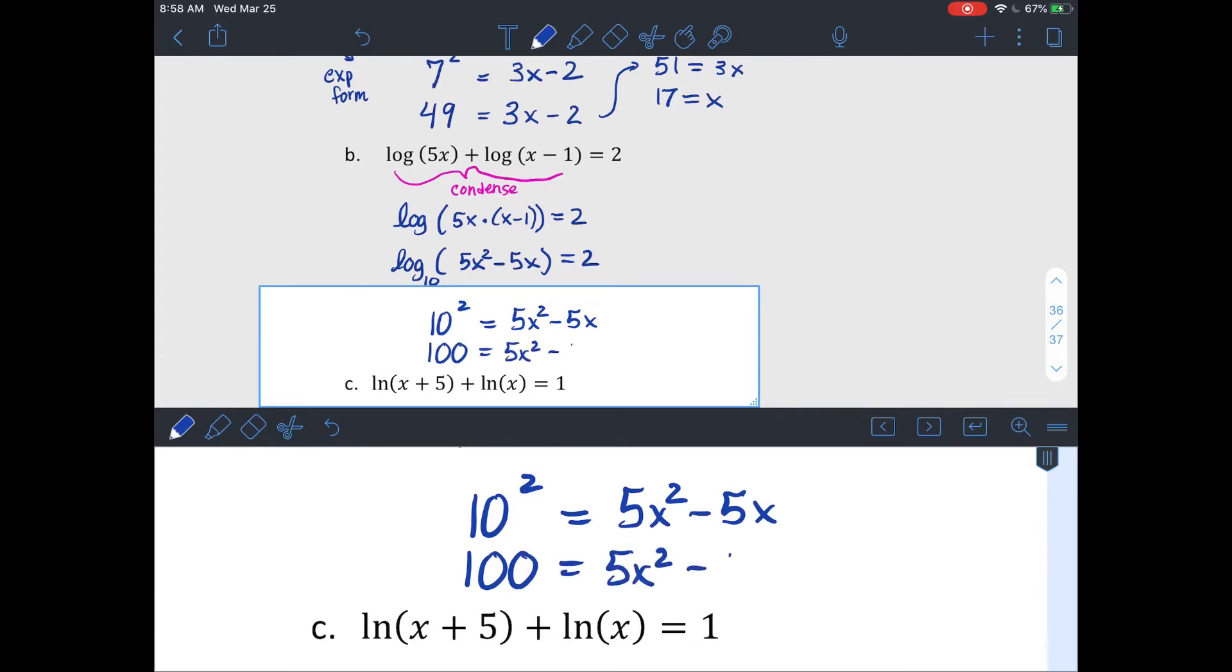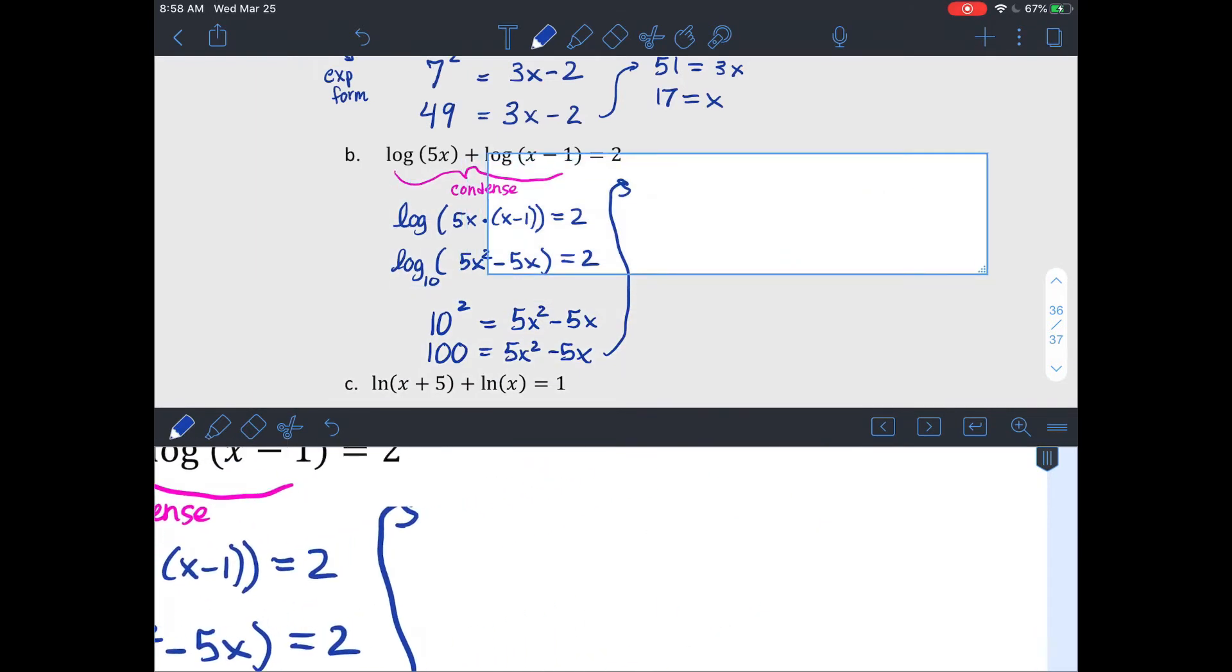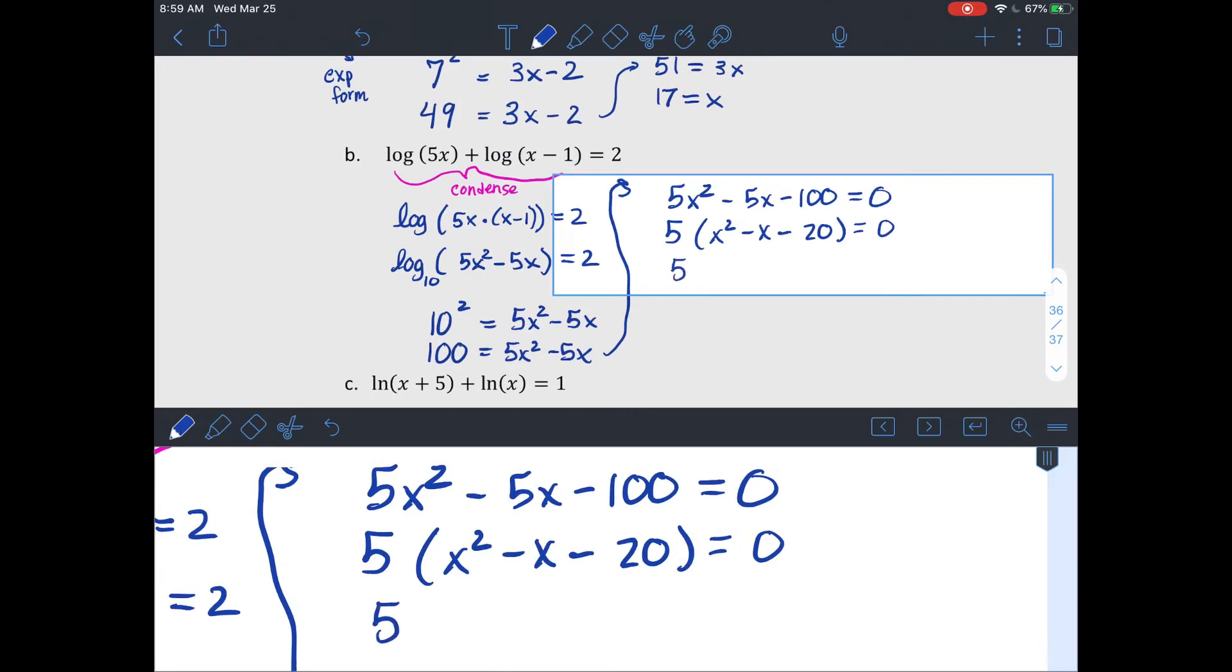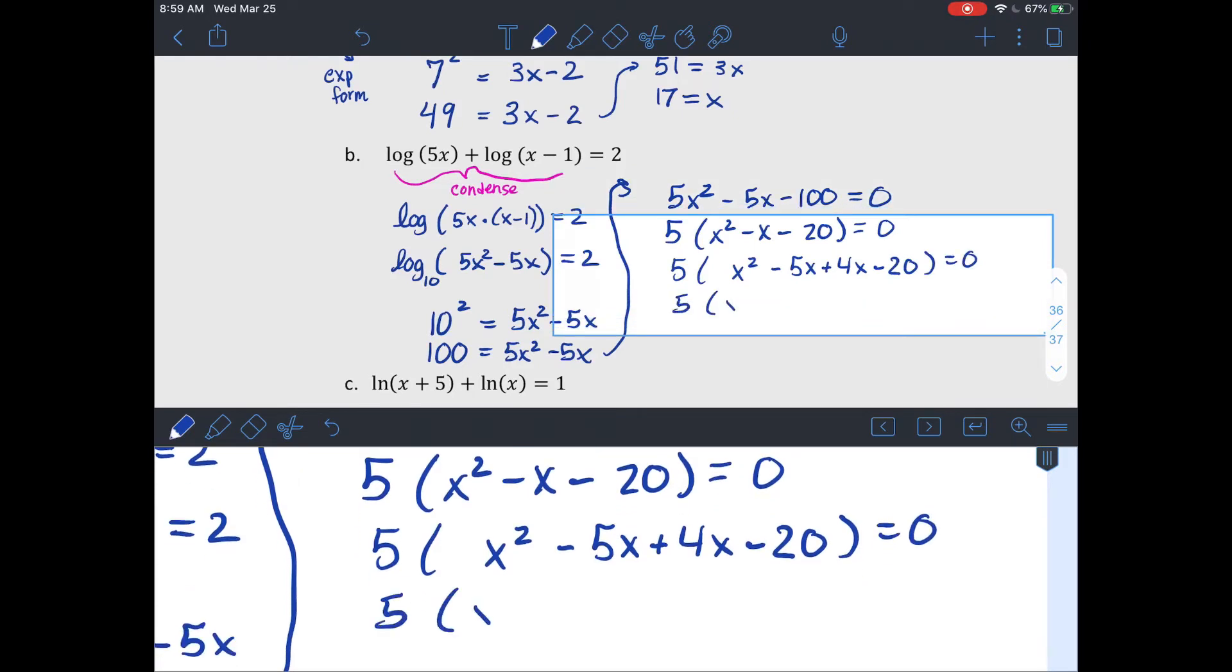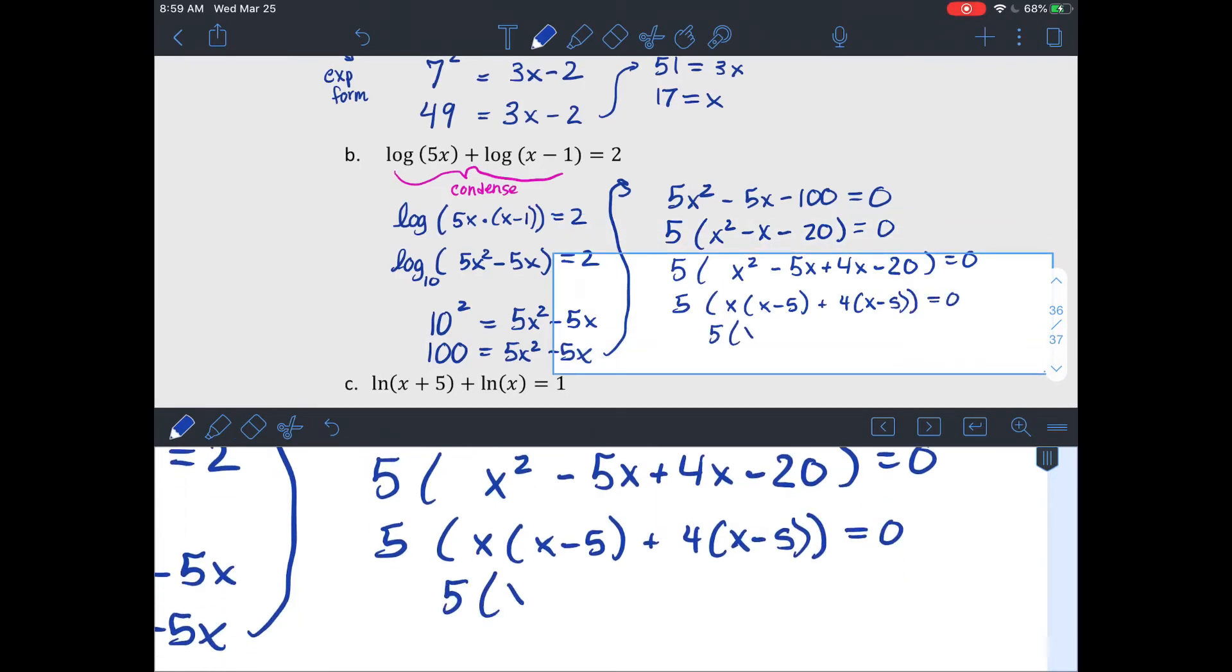Guess what looks like a quadratic? We're going to get 0 on one side, and then hopefully factor it, if not quadratic formula. So I can factor out a 5 from everything. And then looking for two numbers that multiply to negative 20 and add up to negative 1. So I'm going to do that as a negative 5x and a positive 4x would make that work. Do a little bit of grouping. First two terms, my x squared and negative 5x, I can factor an x out of. And then I can pull a 4 out of 4x minus 20.